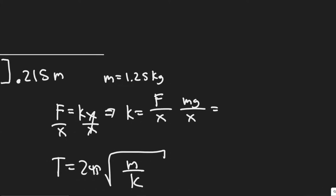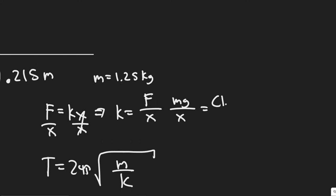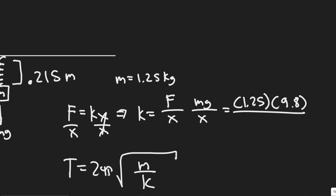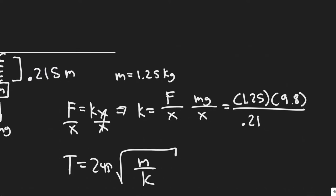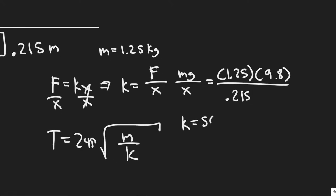But let's just plug in our stuff. So we know what the mass is. The mass is equal to 1.25. So 1.25, that's the mass in kilograms, times the acceleration due to gravity, which is 9.8, over the displacement. So we know the displacement when we apply this force is 0.215 meters. Let me plug this in. 1.25 times 9.8 divided by 0.215.